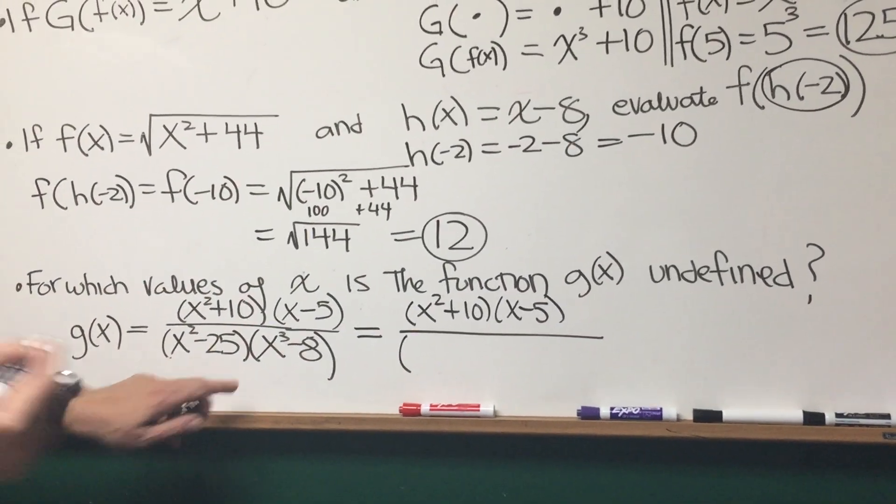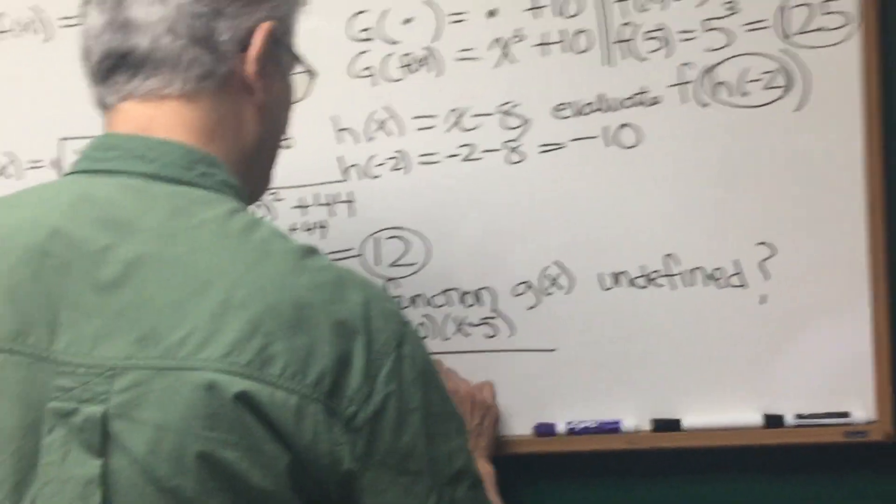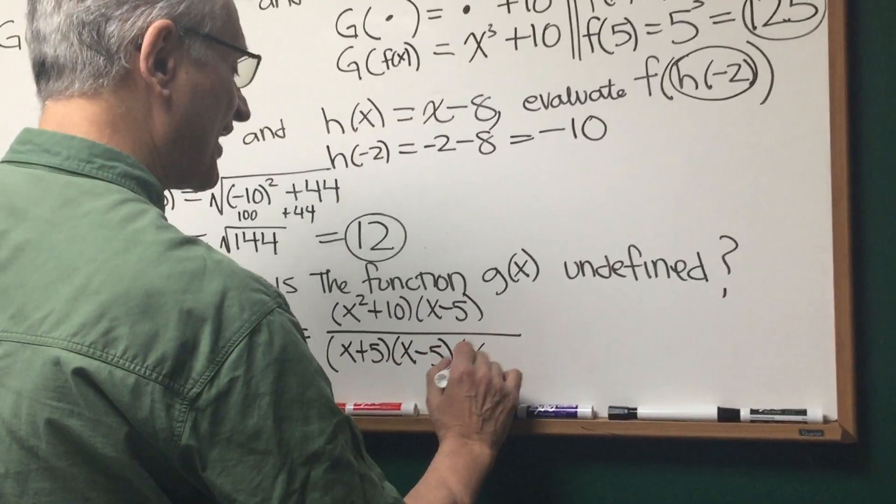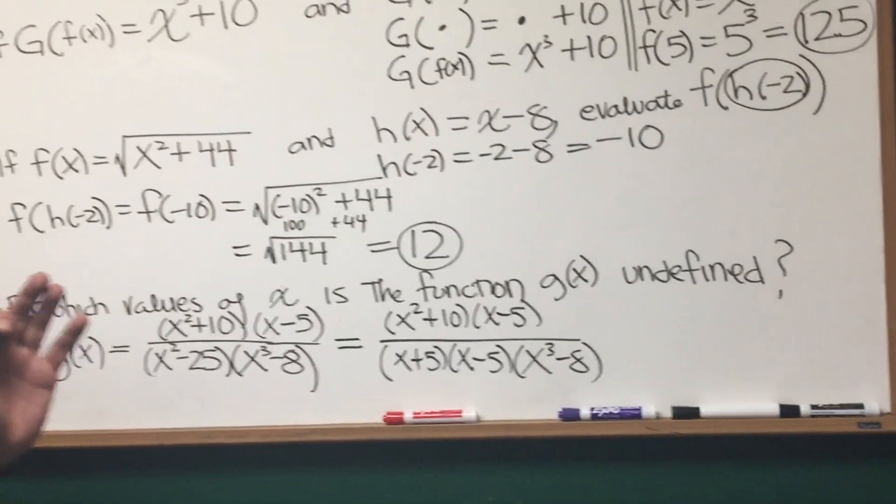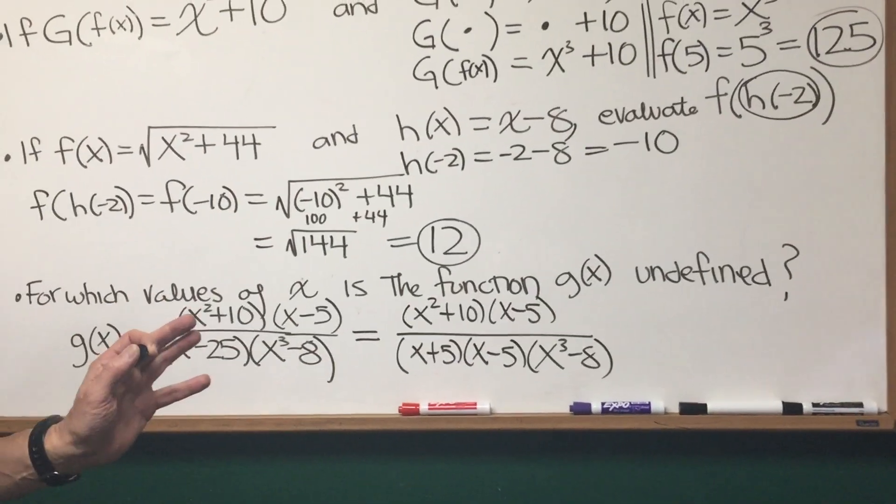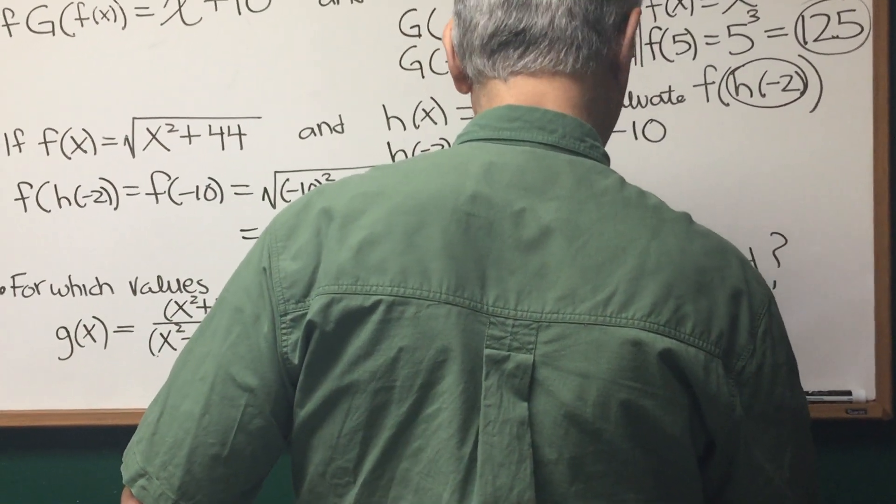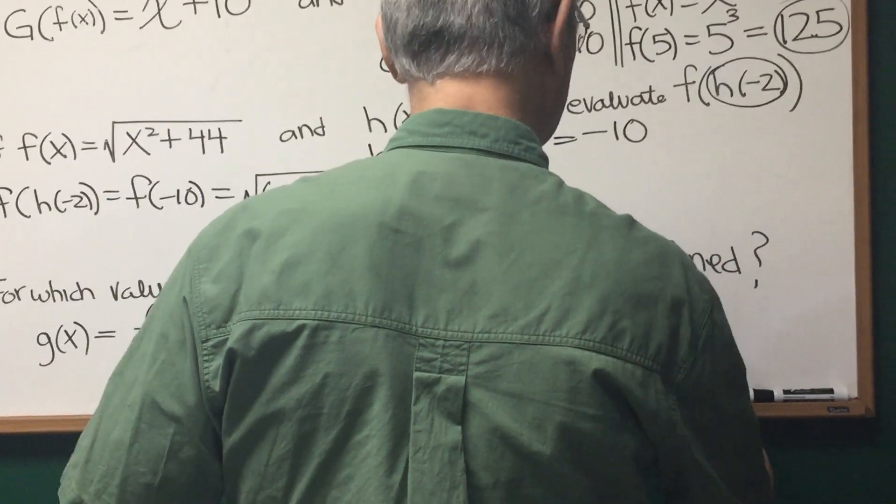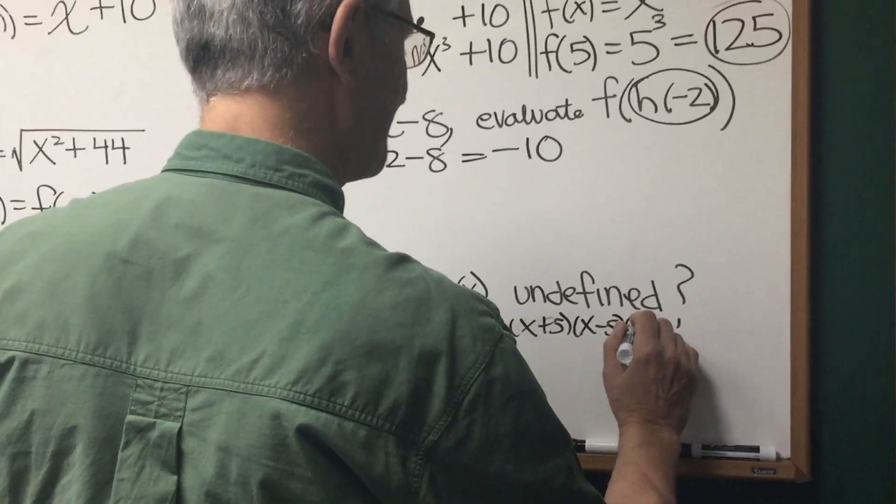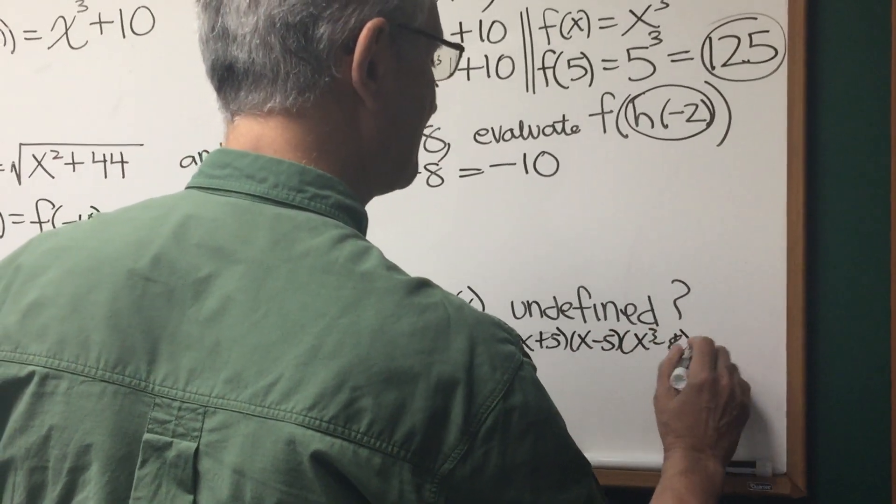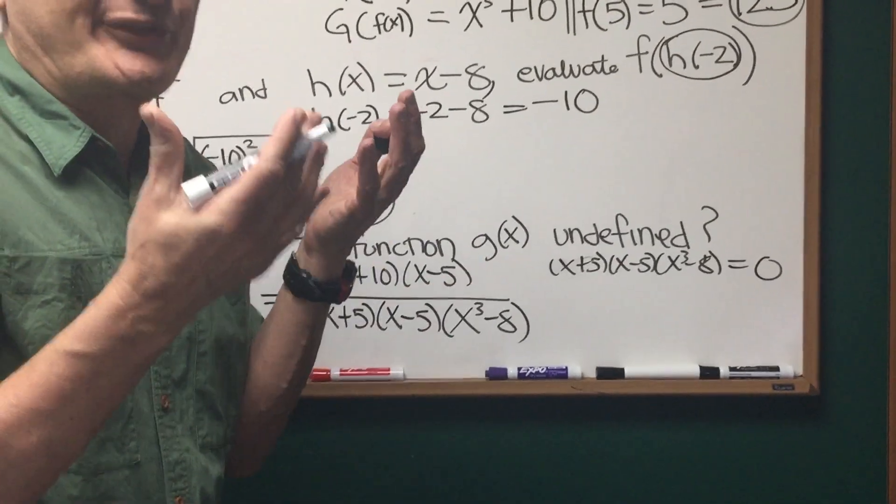x squared minus 25 is the difference of two squares. x plus 5 times x minus 5. And then we have x to the third minus 8, which we need not factor. But we want to identify the places where the denominator is going to be equal to 0. So the denominator, this expression, x plus 5 times x minus 5 times x cubed minus 8. We set it equal to 0. Those are going to be the forbidden values.